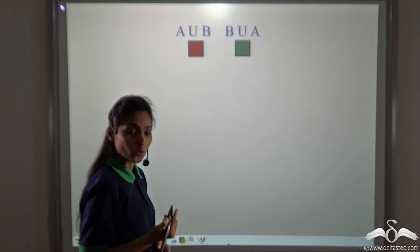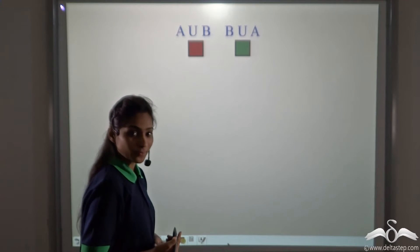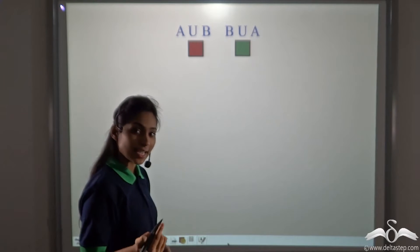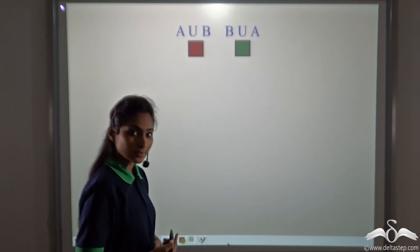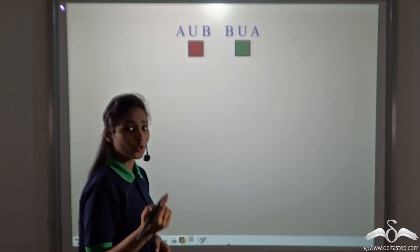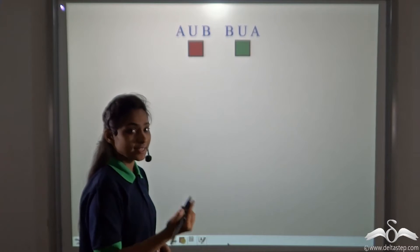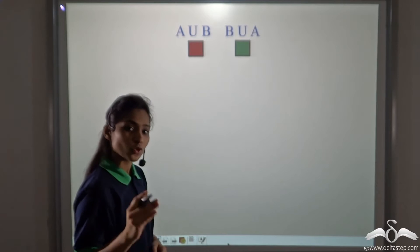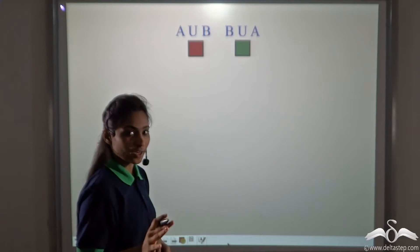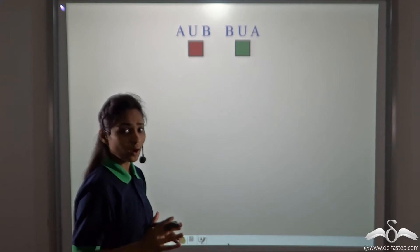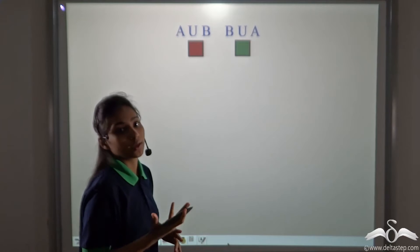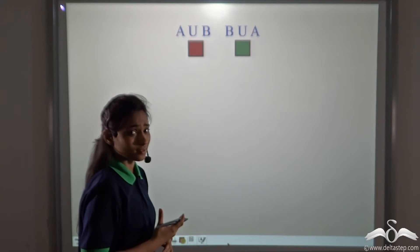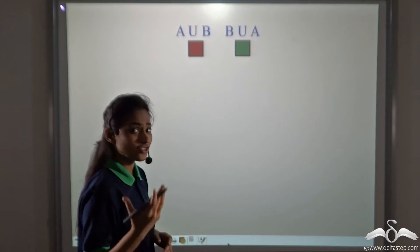You already know what union is. Union is a set of all the distinct elements in two or more sets. So if I give you two sets, say A and B, you can easily find out A union B. You know how to find A union B. Now if I ask you what is B union A, will it give me the same answer? Let's check it today.